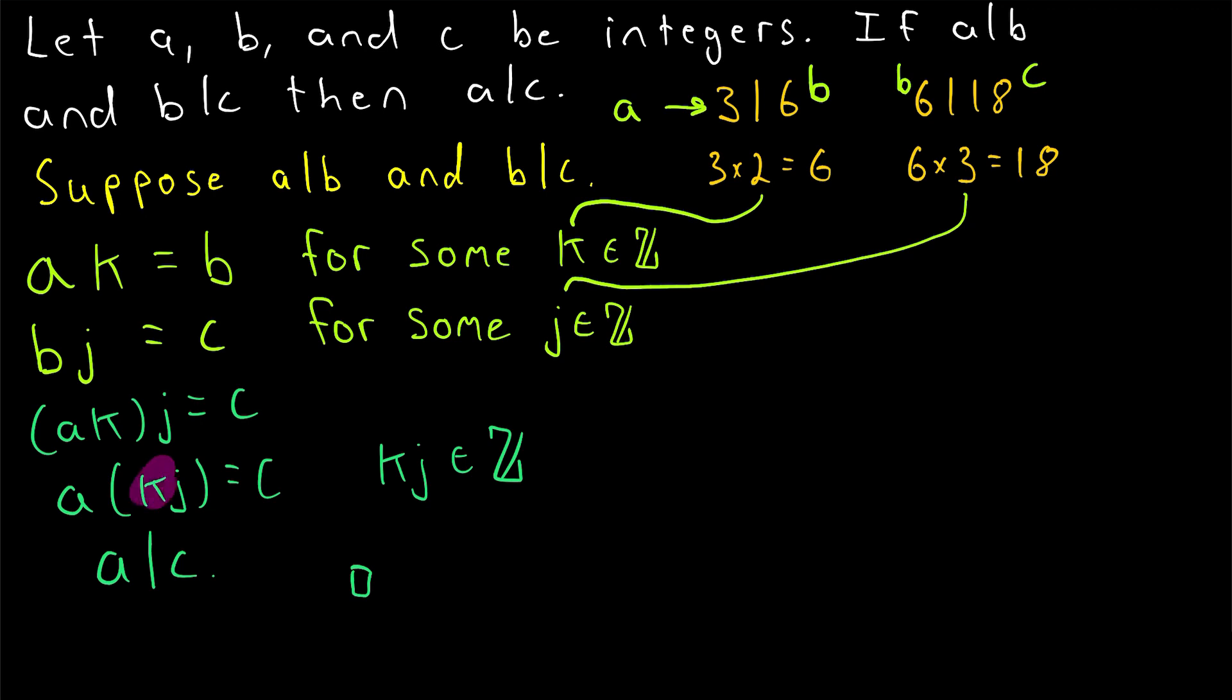Remember, our proof ended showing that if we multiply K times J times A, we will get C. Looking back at our problem, if we multiply two times three times three, which is also our A value, we should get C, which is 18. And indeed, we do.